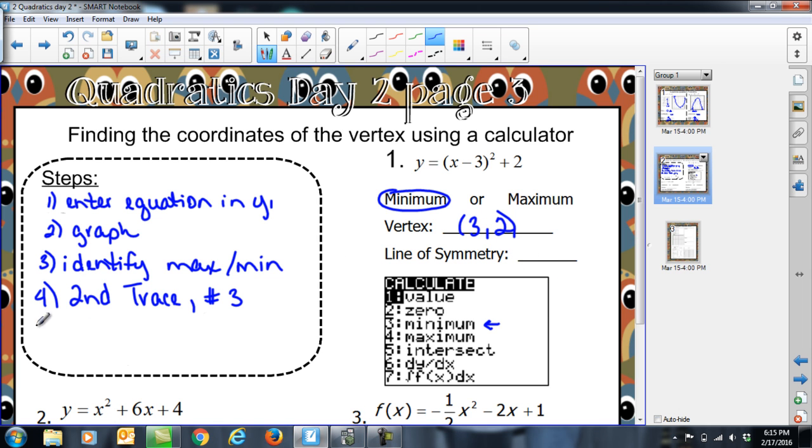The line of symmetry, after we have second traced, we've done number 3, then we need to mark left and right bound and guess so that we can find out what it actually is. Our line of symmetry is that x value of the vertex, so it's at x equals 3.